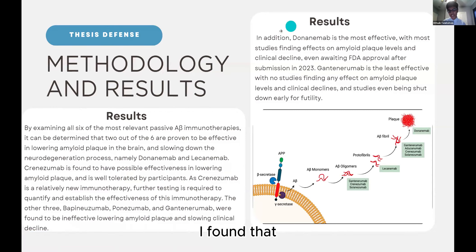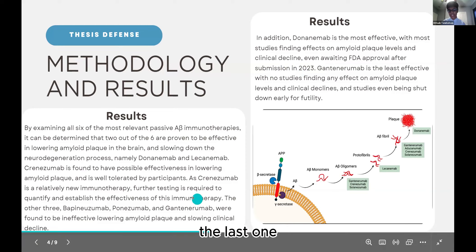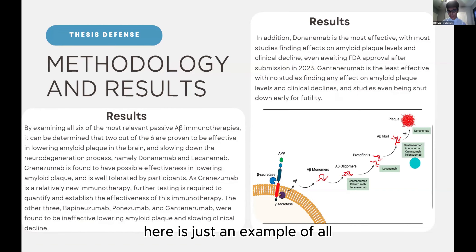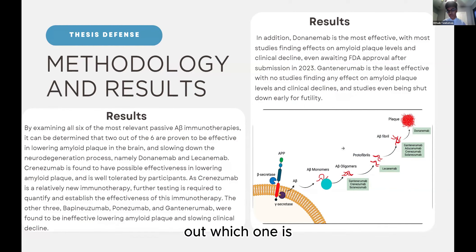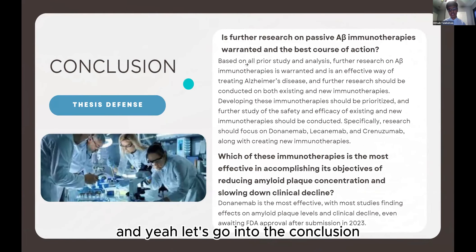For my second research question, donanumab is actually the most effective — it has the most studies documenting its effects on lowering amyloid plaque levels and clinical decline, and it is awaiting FDA approval after submission in 2023. Gantenerumab is the least effective, with no effect on either measure, and studies are even being shut down early for futility. This visual shows that while all are passive amyloid beta immunotherapies, each has its own differences, which is why knowing the most effective one matters for developing future antibodies.